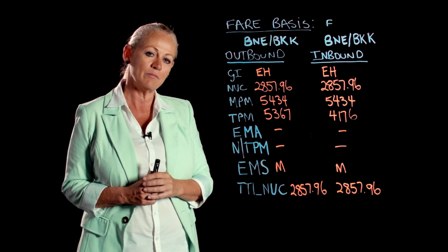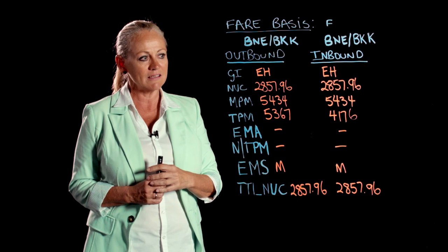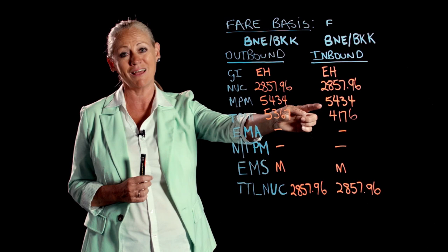And for the inbound, you'll see it's the same — it's also Brisbane to Bangkok, EH, 2857.96. TPMs are lower than the MPM. We're in on miles, so 2857.96.